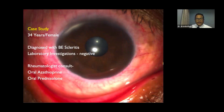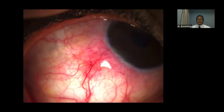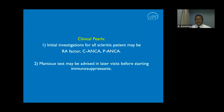A 34-year-old female was diagnosed with bilateral scleritis; all labs were negative. Rheumatologist consult was obtained and she was started on oral azathioprine and oral prednisolone in tapering doses. These presented as diffuse areas of scleritis with congestion in the deep episcleral vessels. The key learning point: initial investigations for scleritis should focus on RA factor and ANCA. In areas of high tuberculosis endemicity, Mantoux positivity needs to be interpreted with caution.